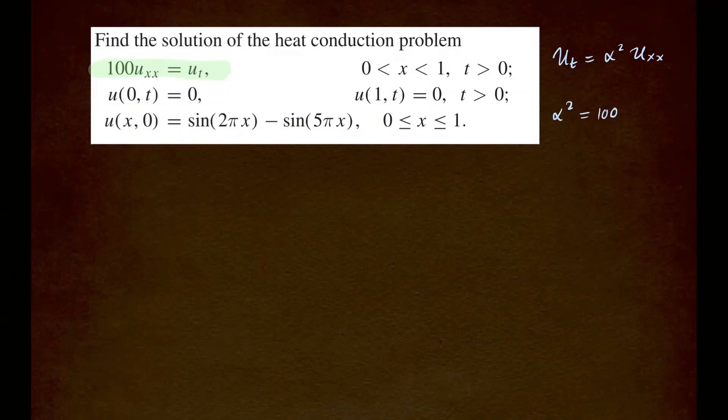And you're given the boundary conditions right here. Both ends are held at 0. And of course, we're looking at x equals 0 to x equals l. So we know l is also 1. So that's going to be this value right here. So x equals 0 to x equals l.